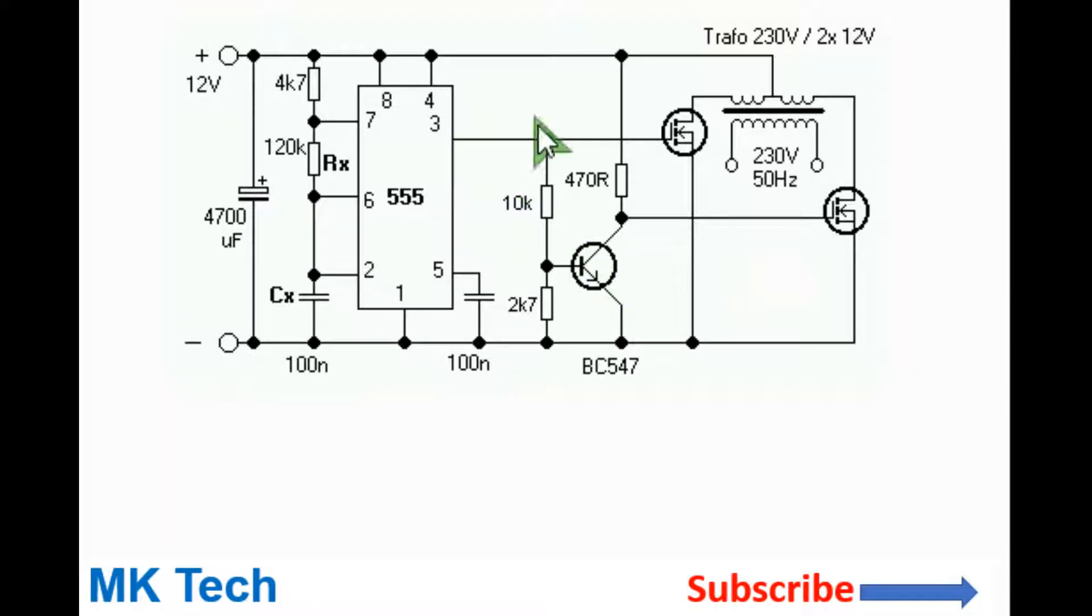When pin 3 turns low, the first MOSFET turns off while the second MOSFET conducts because this BJT will be off and so there will be voltage at the gate of the second MOSFET so it will conduct and allow current to flow through the second winding to ground.